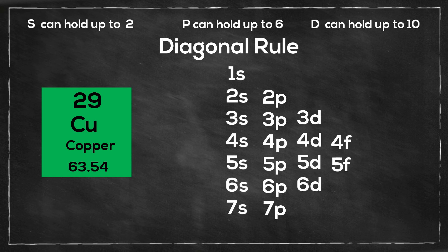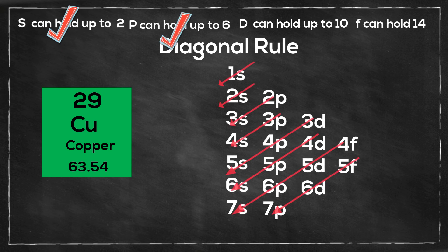The s orbitals can hold up to 2, the p orbitals can hold up to 6, the d orbitals can hold up to 10, and the f orbitals can hold up to 14. And you go up by 4 each time.